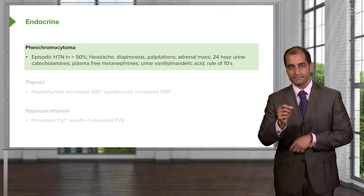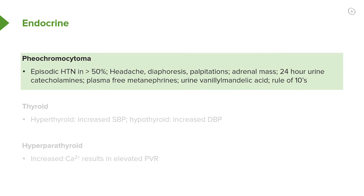In pheochromocytoma, you have too much epinephrine — but is it all the time? No, it's episodic. Pay attention to the term episodic hypertension. If you have too much epinephrine, you may find its metabolites in the urine — that's VMA, vanillylmandelic acid, and metanephrines. This episodic hypertension comes with headaches and diaphoresis — too much sympathetic activity.